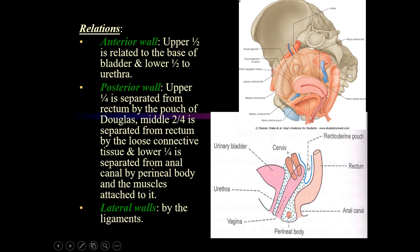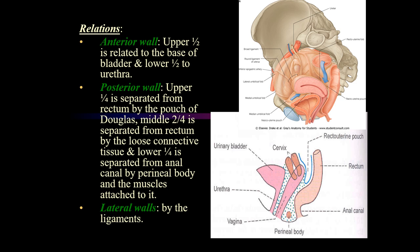The middle two-fourths of the posterior wall are directly related to the rectum, separated only by connective tissue. The lower one-fourth of the posterior wall is separated from the anal canal by the perineal body — the structure where all the muscles of the perineum meet. The perineal body is a very important structure that helps hold the uterus in position and prevents uterine prolapse. The lateral walls are held by ligaments extending from the cervix and uterus.